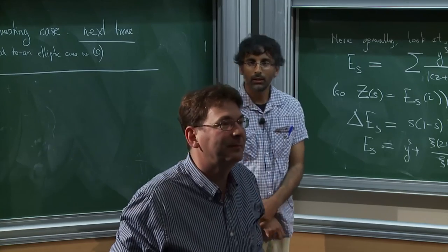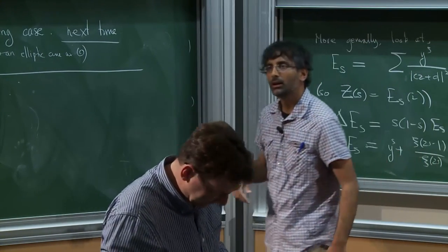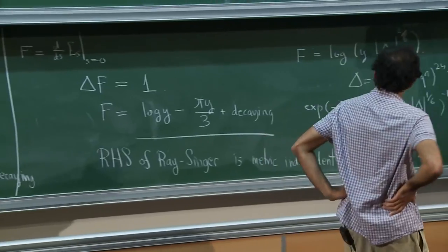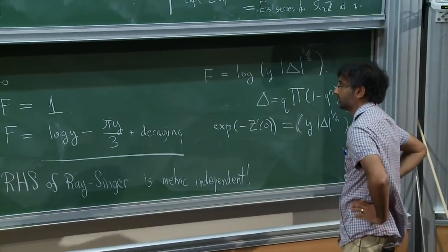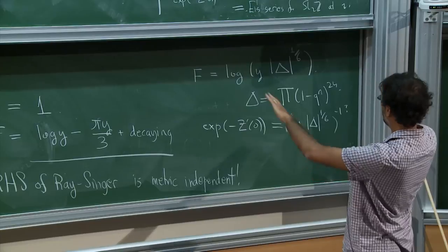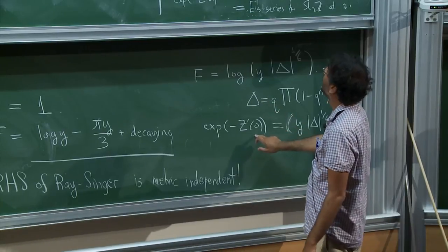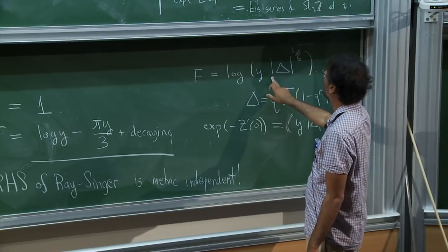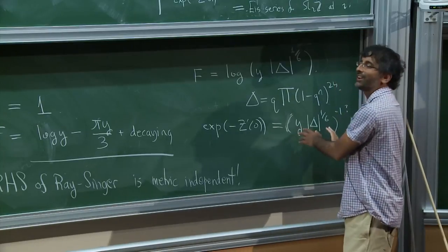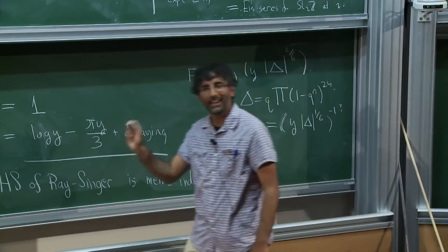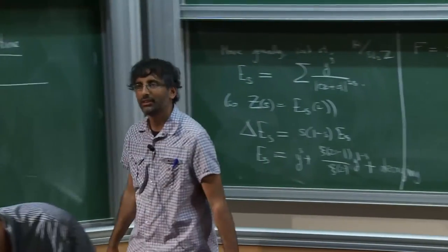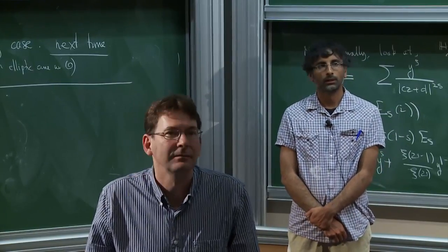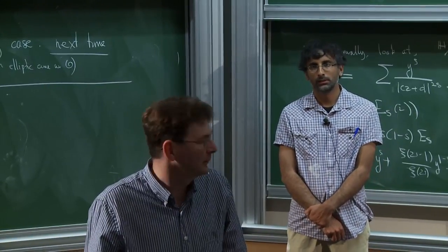Sorry, I went a little bit over time. One clarifying question: when evaluating exp(−Z'(0)), there's a y in the formula — but since we specialize to the point i, y equals one, so the y factor disappears. Thank you.